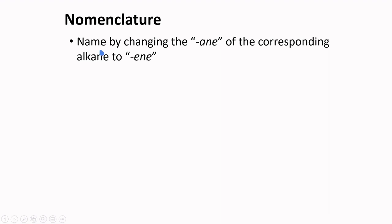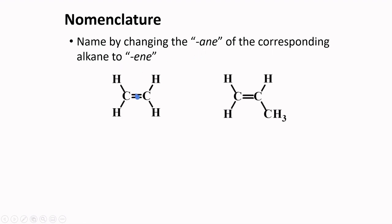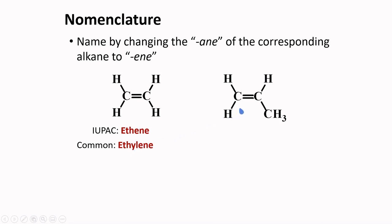Alkenes and cycloalkenes are named by changing the '-ane' of the corresponding alkane to '-ene'. For example, the compound having two carbons is called ethene in IUPAC; the common name is ethylene. The compound containing three carbons is called propene in IUPAC, and the common name is propylene.